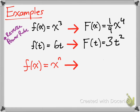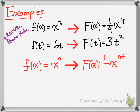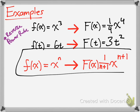Here's the reverse power rule formula. For a function raised to a power n, what did we do in the problems above? We added 1 to the exponent — so n plus 1. But we also multiplied by a fraction that was 1 over n plus 1, which is 1 greater than the original exponent. That is the formula method.